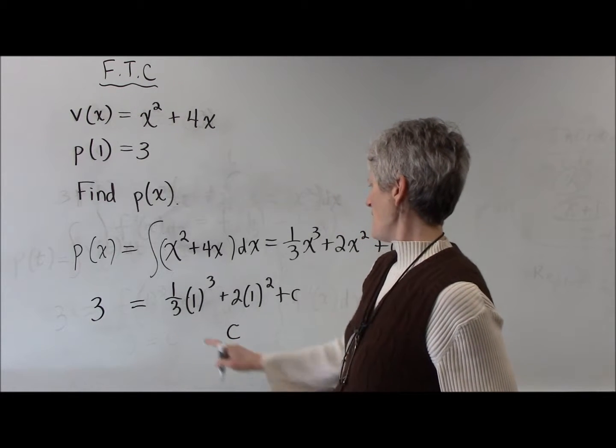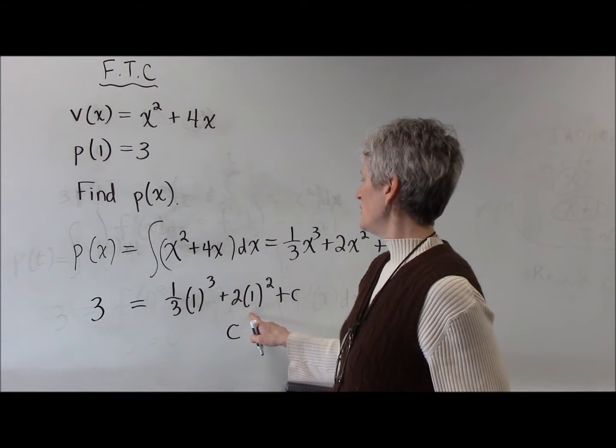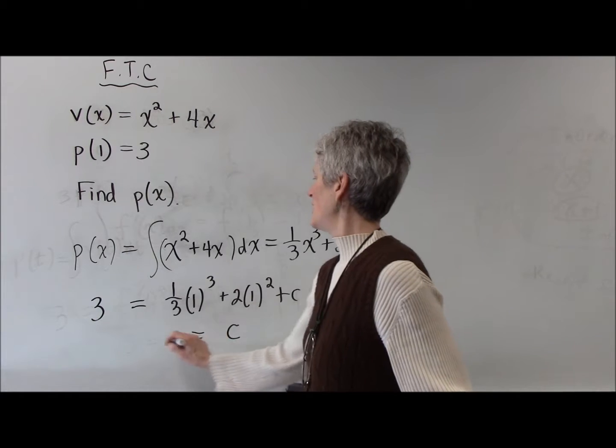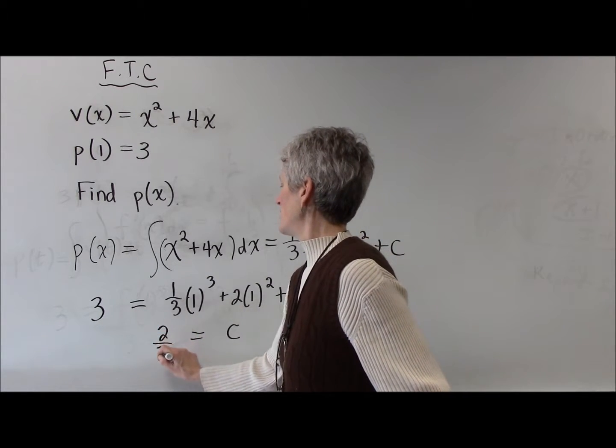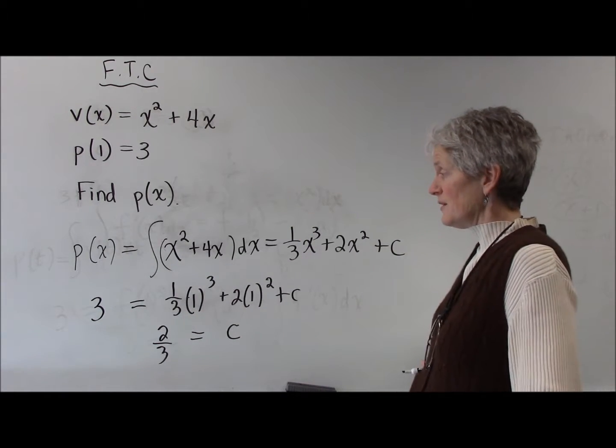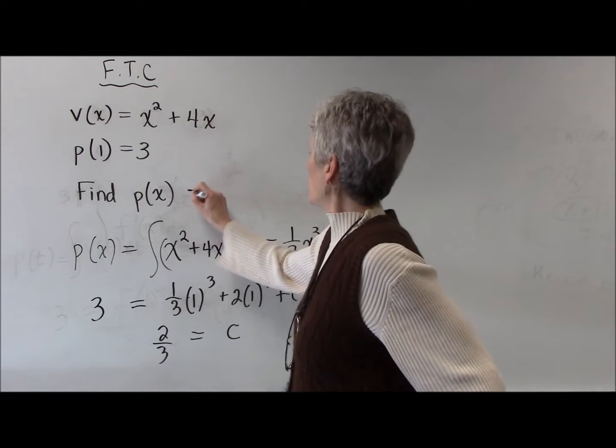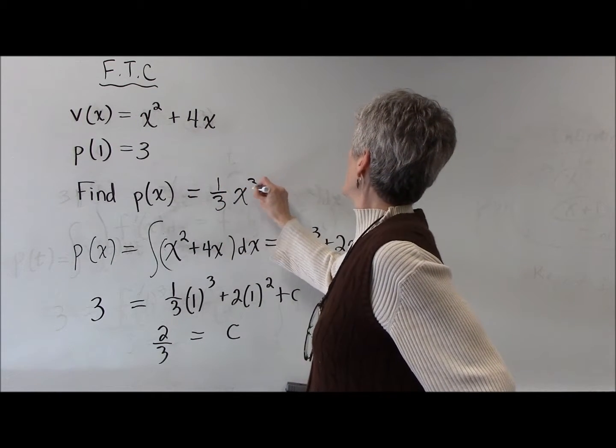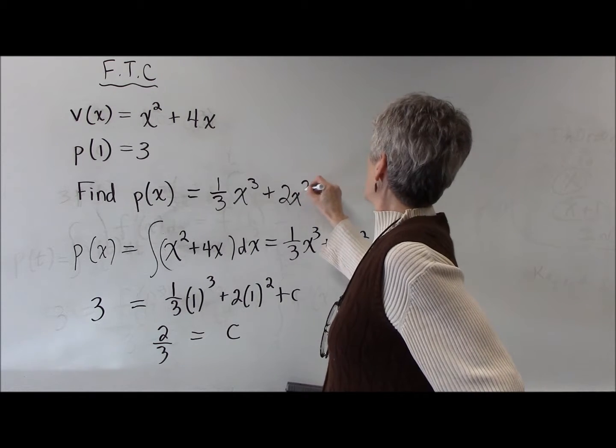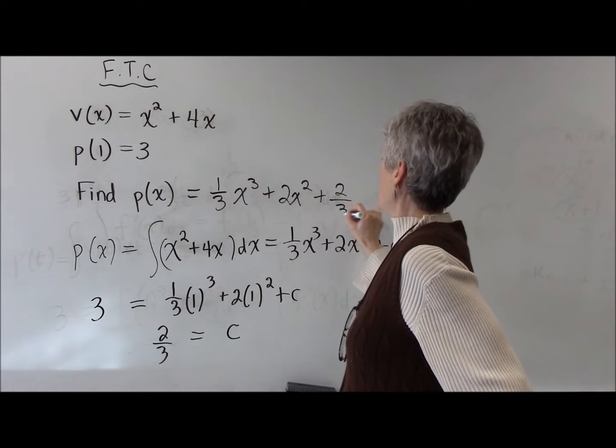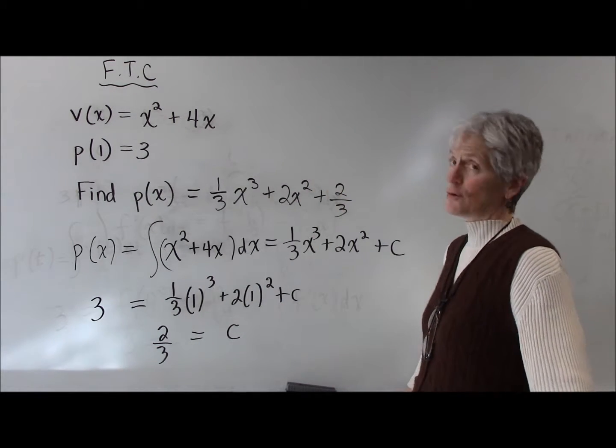So let's see, I have 1/3 plus 2, that's 2 and 1/3, so I'm pretty sure my c would be 2/3. So p of x would be 1/3 x cubed plus 2x squared plus 2/3 and I hope I did my arithmetic correctly.